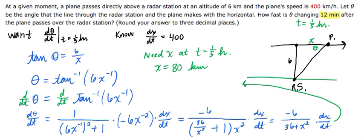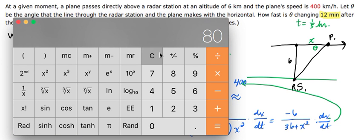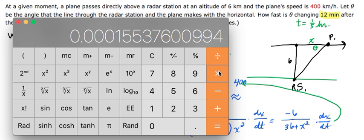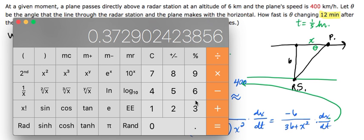I'm out of space, so I'm going to bring this back up here. dθ/dt when t is 1/5 of an hour equals -6 over 36 plus 80 squared times dx/dt, which is positive 400. So this comes to approximately, let's get the calculator out. We have 80 squared plus 36 in the denominator, make that into the denominator, multiply it times 6 and times 400 to get -0.3729.